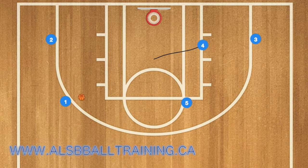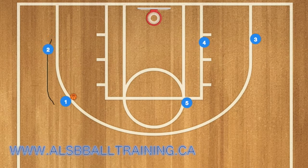If neither of those are options, four will clear out to the right low post and five will pass player one the ball. Two and one will then do a dribble handoff.